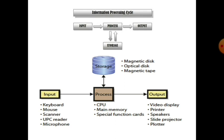Next is the storage device. Storage devices are used for storing information permanently inside the computer. Examples include magnetic disk, optical disk, magnetic tape, pen drive, compact disk, DVD, and hard disk. All these are examples of storage devices in which we can store data permanently or temporarily.